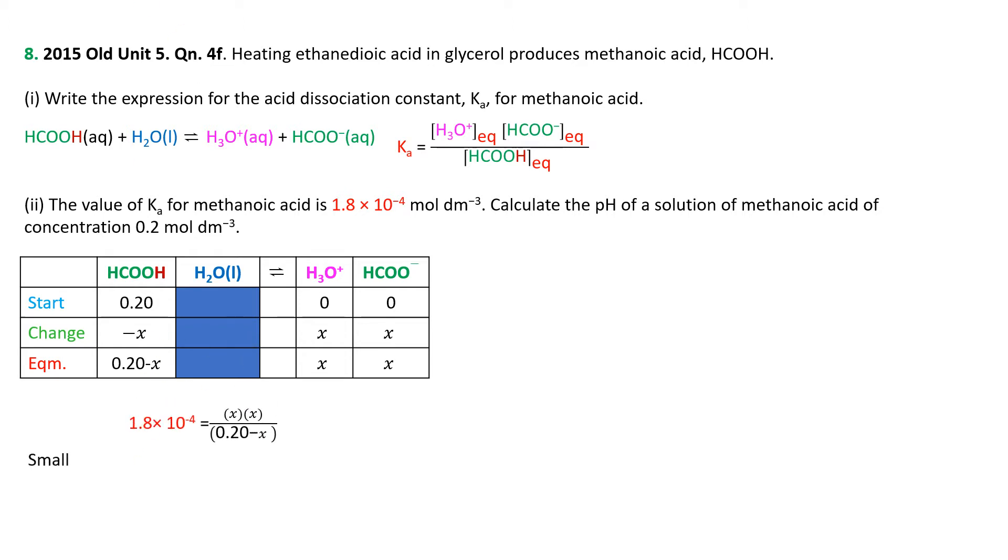Pop all that into what we know. 1.8 times 10 to the minus 4 is the Ka value. X, X, 0.2 minus X, all from the score chart. This is relatively small. If that's small, that tells us we're not going to get very many products. If we don't have very many products, X will be small. Maybe X is small enough that we can ignore it when we subtract it from 0.2. So we can pop in 0.2 instead of 0.2 minus X. Multiply that out and we get X is 6 times 10 to the minus 3.